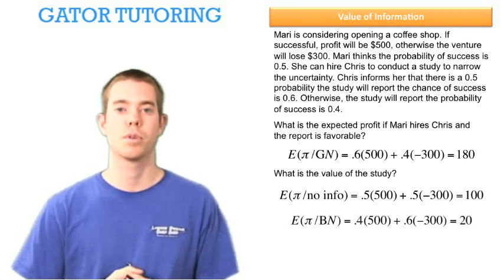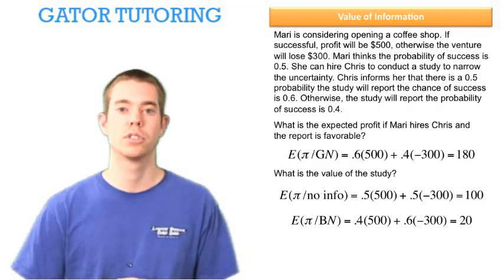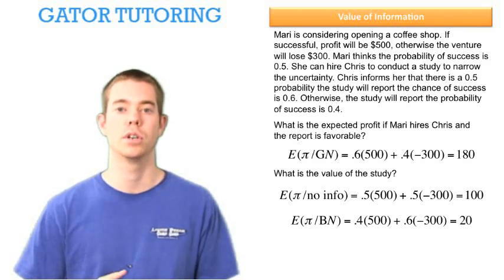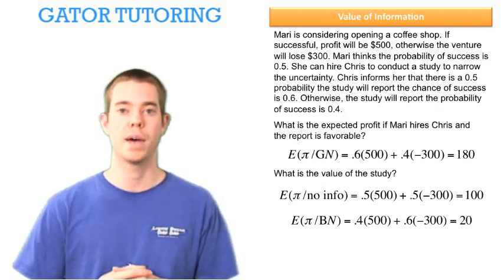The expected profit given bad news, well given bad news, the chances of success are 40%. So 40% times our 500, plus 60% times our negative 300, gives us an expected profit given bad news of $20.